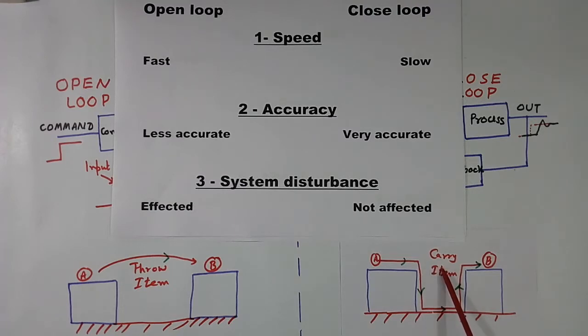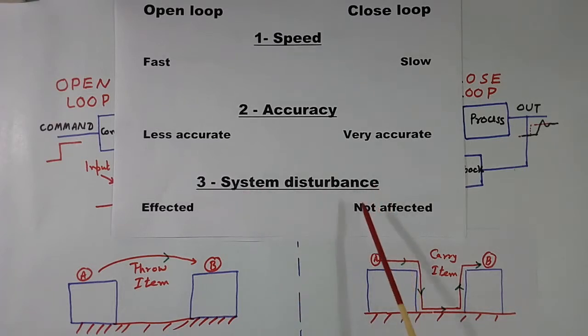But in this case, when a person carries the ball personally in closed loop, even if he moves, or even moves from say fourth floor to third floor or second floor, this person can always trace him and give the ball personally. So system disturbance does not affect. This control system is not affected by system disturbance.